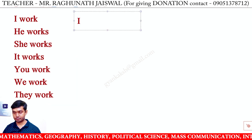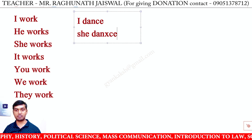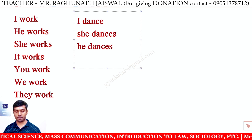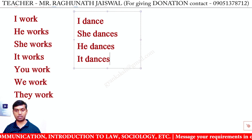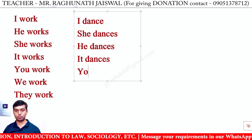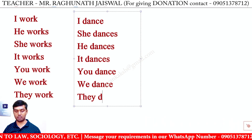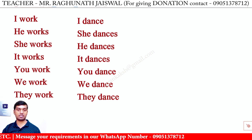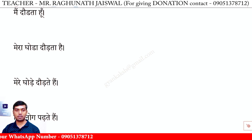I dance. He dances. He dances. It dances. You dance. We dance. They dance. I dance. So the verb with I, You, We, They remains in normal form. With He, She, It — we use S or ES. So let's start.